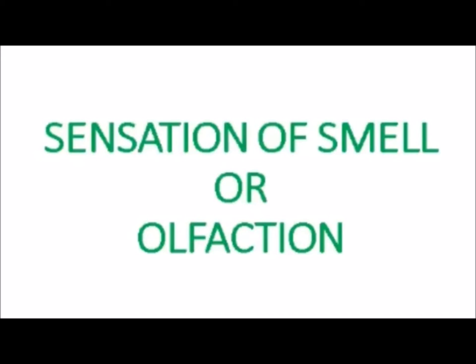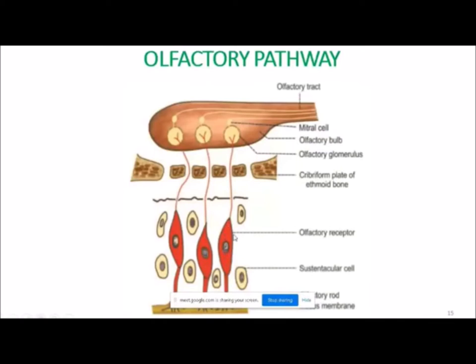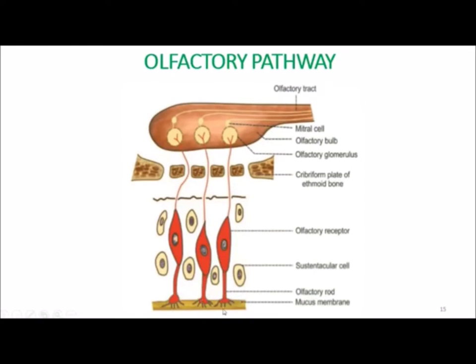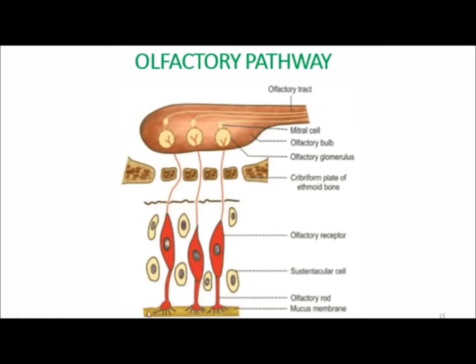For olfaction, we need olfactory receptors situated in the olfactory mucous membrane that lines the upper part of the nostril. This yellow part in the diagram is the olfactory mucous membrane. The olfactory mucous membrane consists of around 10 to 20 million olfactory receptors, supported by sustentacular cells. This mucous membrane also contains Bowman's glands.